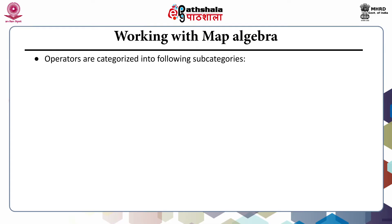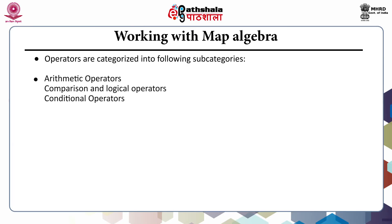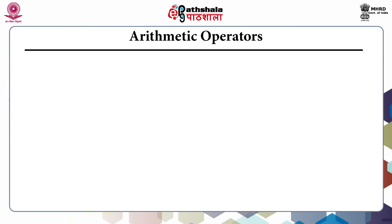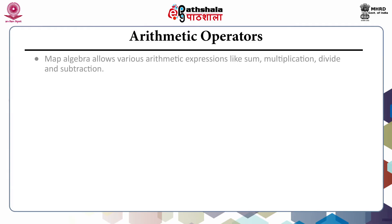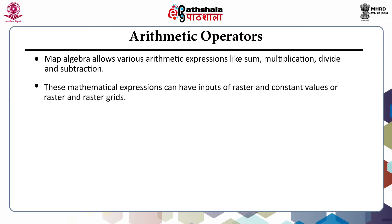Operators are categorized into the following subcategories: arithmetic operators, comparison and logical operators, and conditional operators. The first being arithmetic operators — map algebra allows various arithmetic expressions like sum, multiplication, division and subtraction. These mathematical expressions can have inputs of raster and constant values, or raster and raster grids.